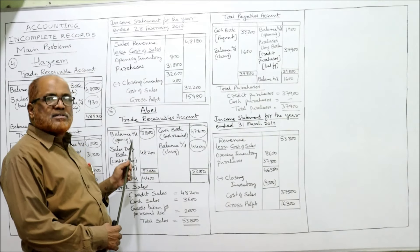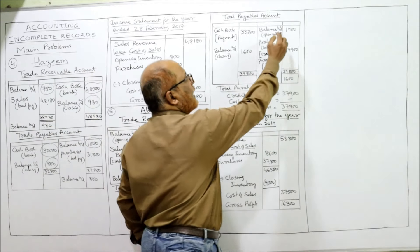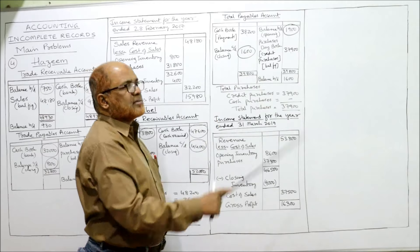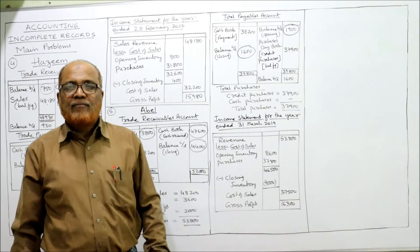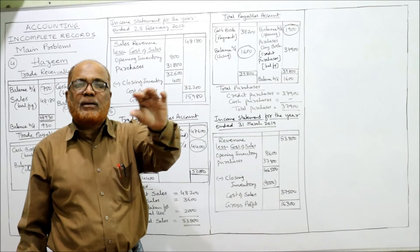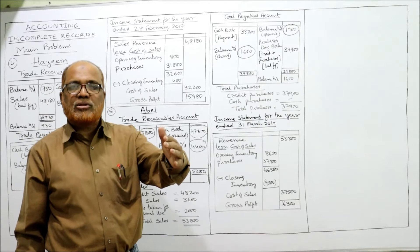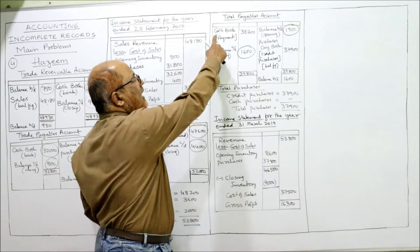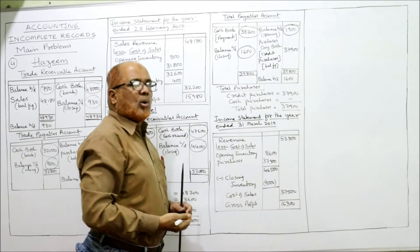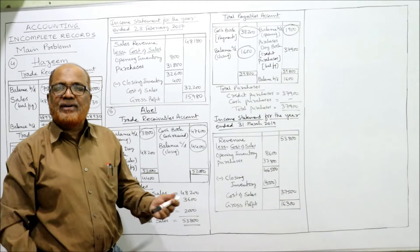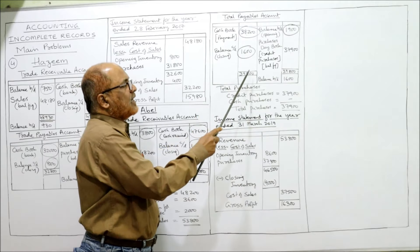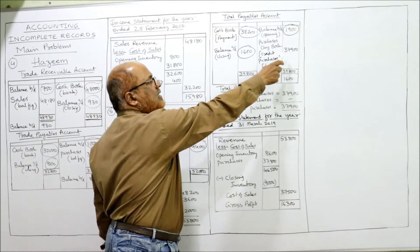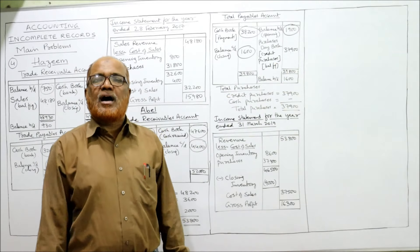Trade payables account: opening balance on the credit side is 1,900; closing balance on the debit side is 1,600. Cash paid to suppliers is 38,200, which goes on the debit side. Balancing: debit side 38,200 plus 1,600 equals 39,800, minus opening balance 1,900 equals 37,900 — these are the credit purchases.